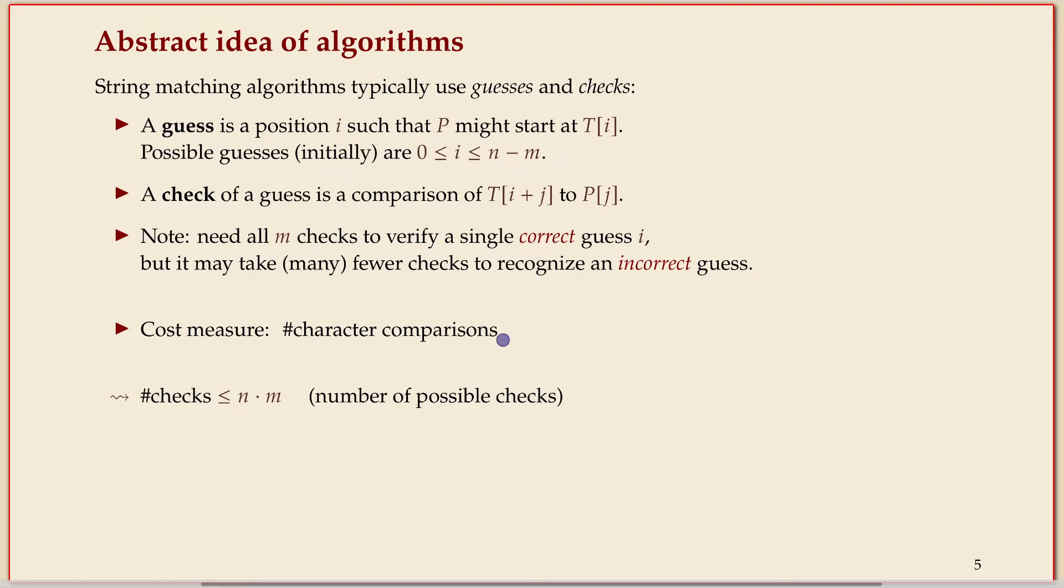That nicely leads us to a useful cost measure. The word RAM model says we should count all these primitive instructions, but we don't often feel like coding at that low level. So instead we count something that's the same for all these possible conceivable implementations, an abstract cost measure. That's the number of character comparisons in this case, the number of checks.